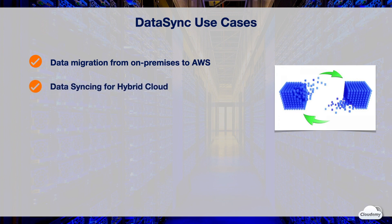When you have hybrid cloud workloads, you can use DataSync to move data into or out of AWS for processing, and work with systems that generate data on-premises. It can accelerate critical hybrid cloud workflows such as video transcoding, scientific research, machine learning, and big data analytics.